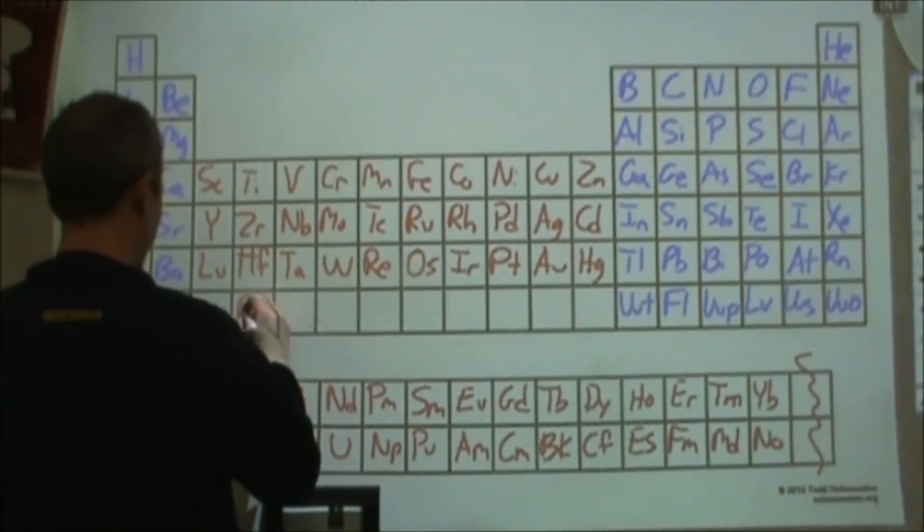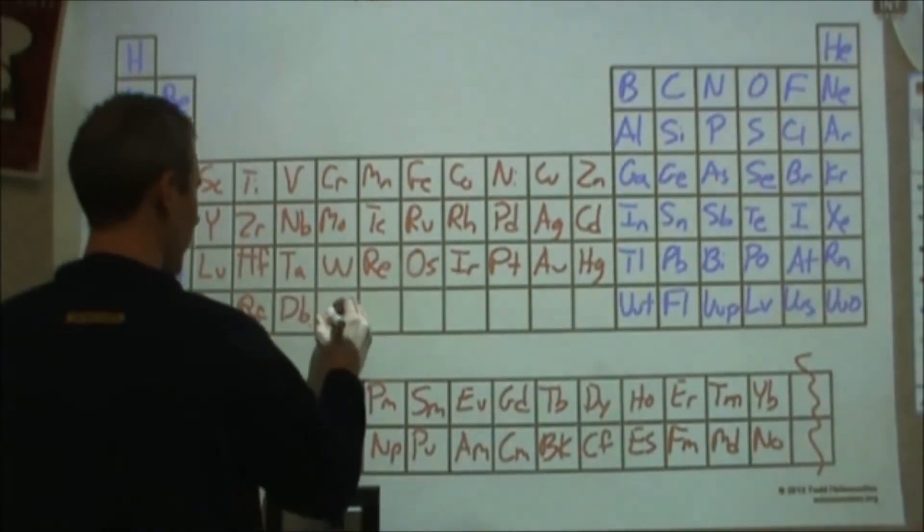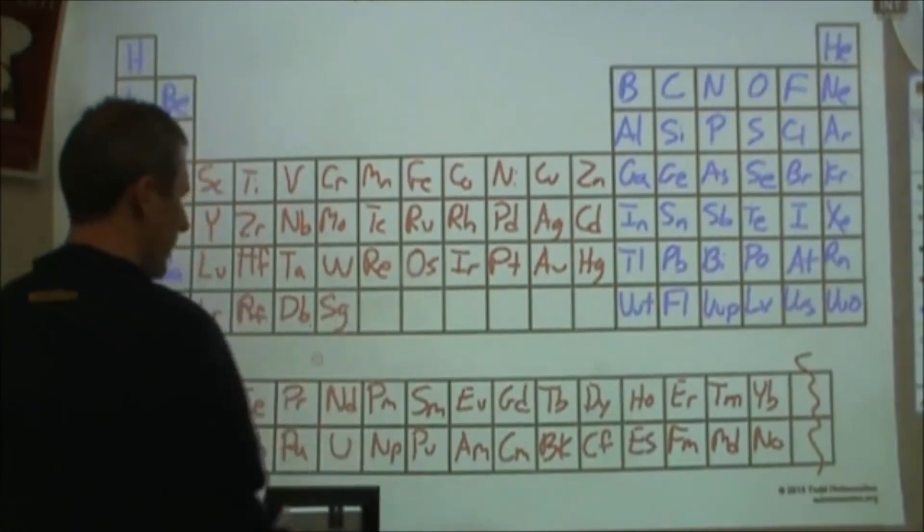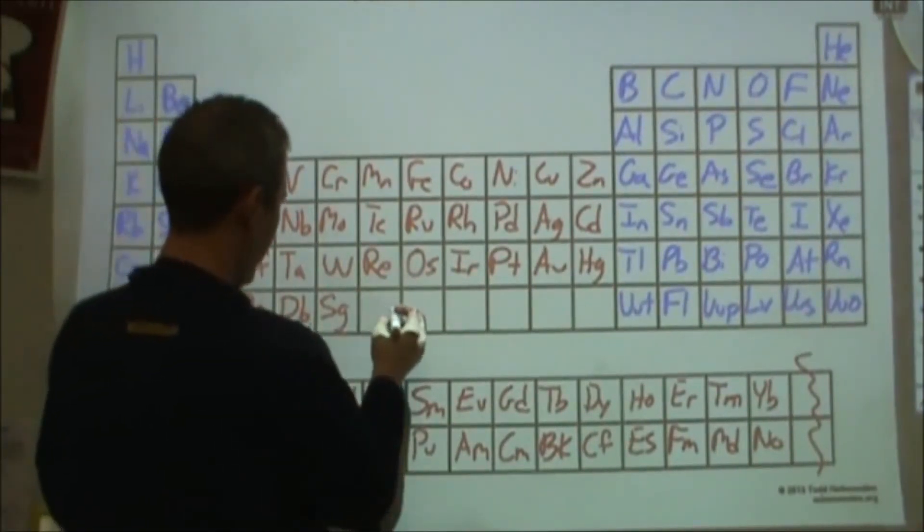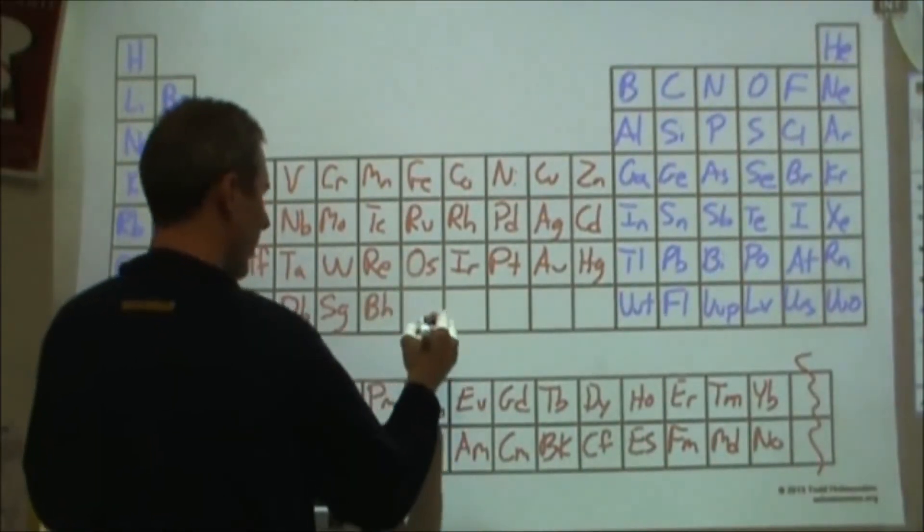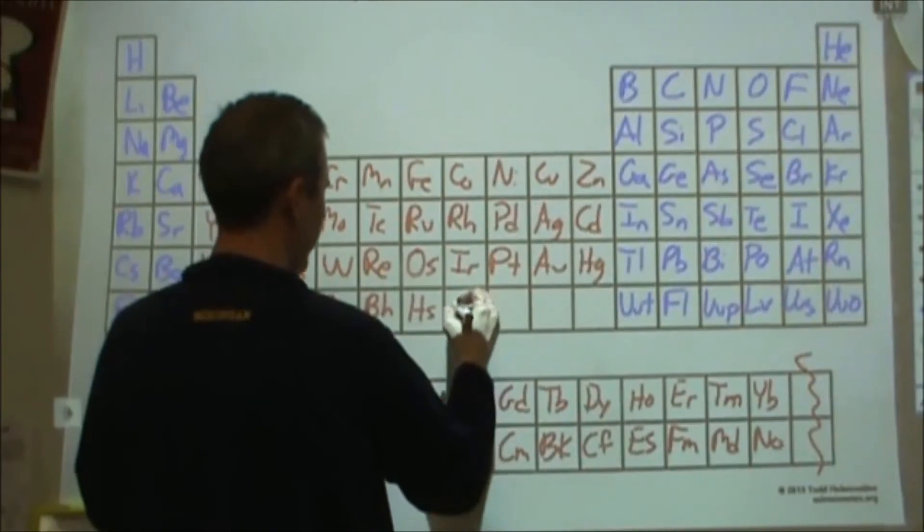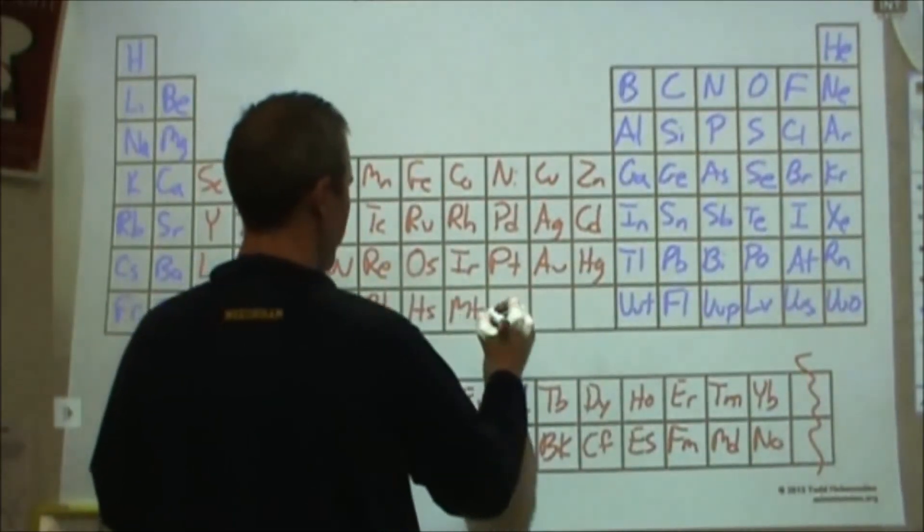And then we have rutherfordium. And then 105 is dubnium. 106 is seaborgium, from Ishpeming, Michigan. And then 107 we have bohrium. After bohrium we have hassium. And then we have meitnerium, 109.